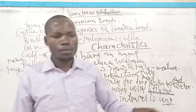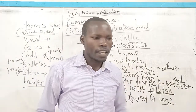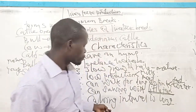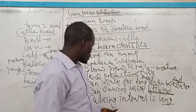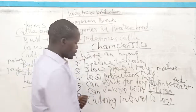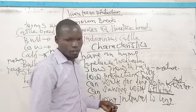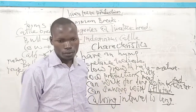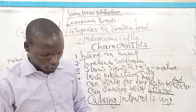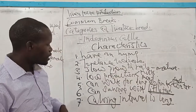The calving interval is long — that means they take a long period from one calving to the other calving. Calving is the act of giving birth in livestock. Therefore, among these characteristics, you should be able to classify them accordingly.